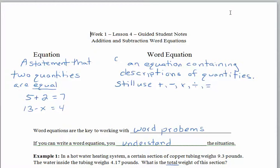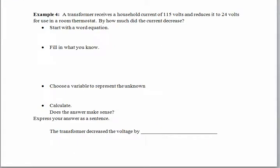A transformer. Whoops. Hold on. There we go. That's better. One of these days I'll get the hang of this scrolling thing. So a transformer receives a household current of 115 volts and reduces it to 24 volts for use in a room thermostat. By how much did the current decrease? So there's our keyword. And that should tell us that there is some subtraction happening in the problem. Let's start with a word equation so we make sure that we really understand what our situation is. We have this household current. And we're going to decrease it by a certain amount. And when we get done decreasing it inside the transformer, we will end up with current that goes to the thermostat.